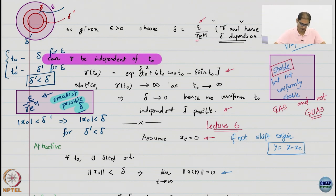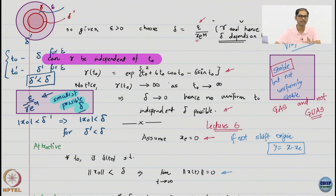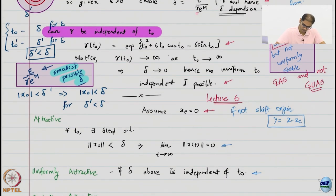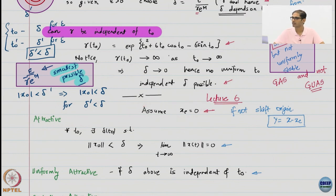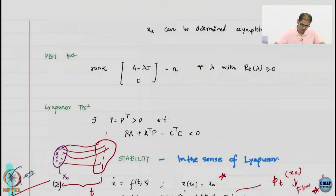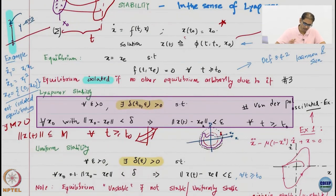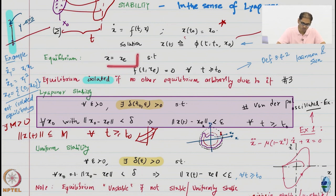What we do today is continue to talk about more properties and move towards asymptotic convergence or asymptotic stability — that is the idea for today's lecture. We start by assuming that the equilibrium is the origin. The equilibrium is simply any point in the state space from which you never move under ideal circumstances.